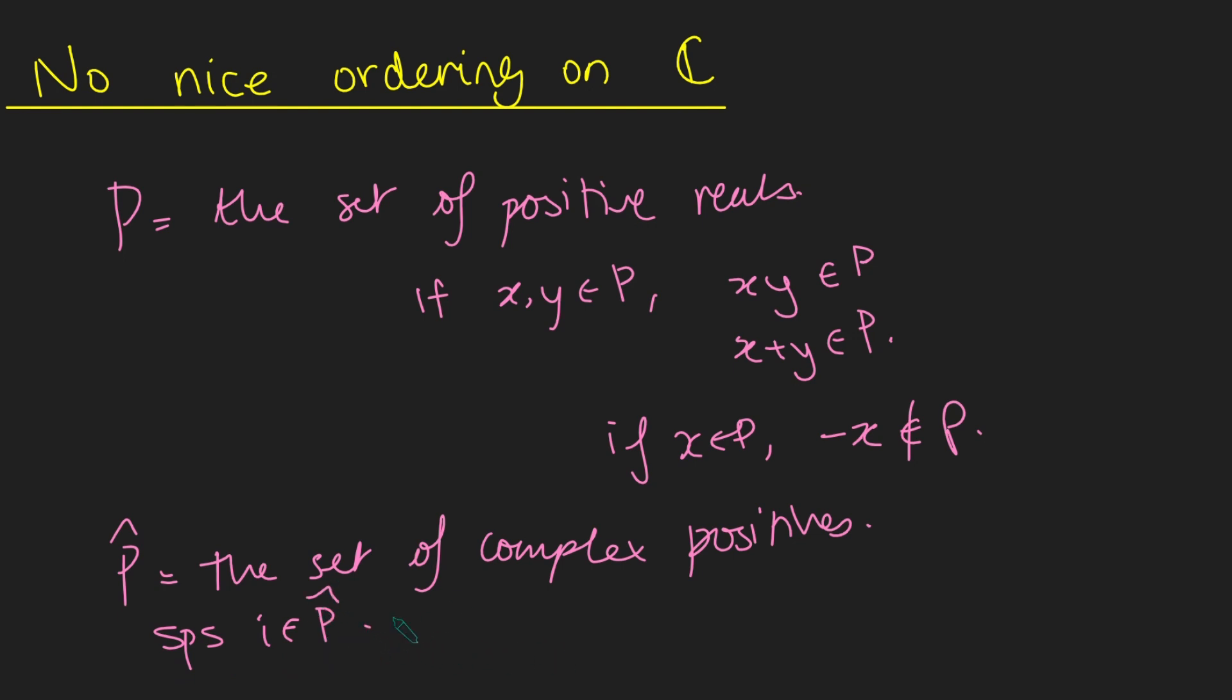Well, then we can use this first property here that the product of two numbers in P hat remains in P hat. So therefore, i times i, which is minus one, is also going to be in P hat. So we get minus one is in P hat. But then we can say, well, since minus one is in P hat, minus one times i, again using this first property, is also in P hat. So minus one times i, which is minus i, is in P hat.